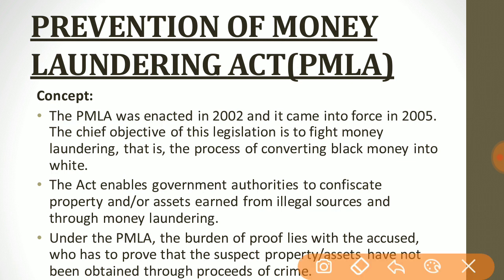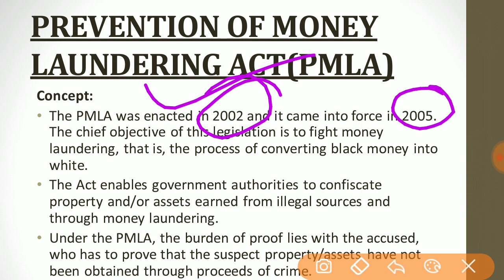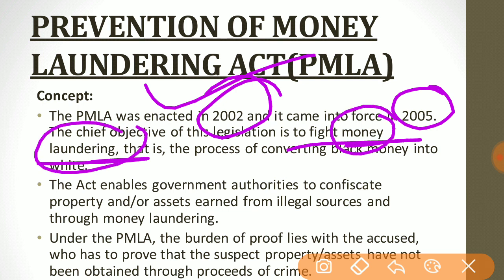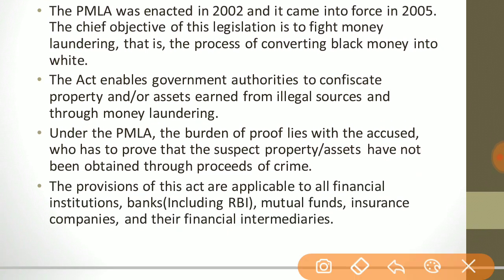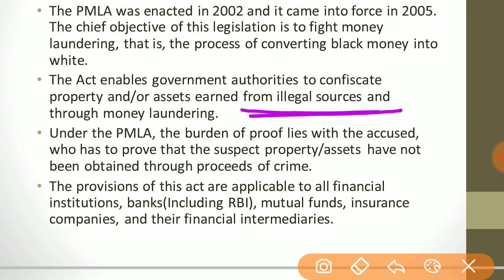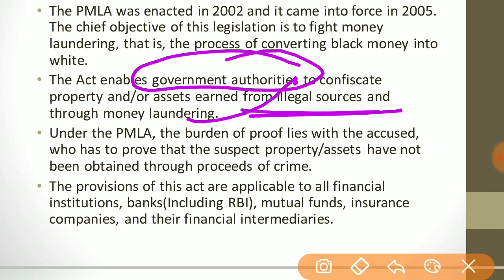The Prevention of Money Laundering Act, also known as PMLA, was enacted in 2002 and came into force in 2005. The objective of this act is to fight money laundering — the process of converting black money into white, meaning converting corrupt money back into legal form. This act enables government authorities to confiscate property or assets earned from illegal sources through money laundering.